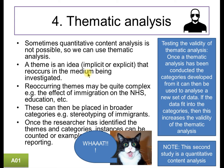Reoccurring themes may be complex. Imagine, for example, the effects of immigration on the NHS. If you're picking these out of newspapers, just trying to look for the words 'immigration' and 'NHS' is not going to tell you much. However, looking for general themes will tell you how these newspapers view immigration and its impact, whether it's positive or negative. The nuance there is positive because immigrants work for the NHS, and negative because immigrants may use the NHS. These can then be placed in broader categories, e.g. stereotyping of immigrants. And once a researcher has identified the themes and categories, instances can be counted.